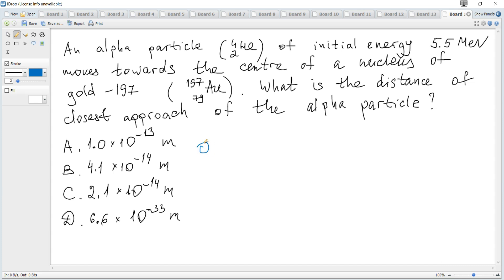This situation looks like this: An alpha particle is positively charged and the nucleus of gold is also positively charged, and there is an opposing force.